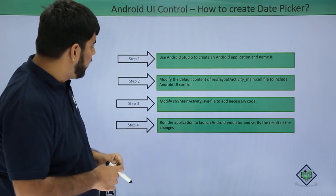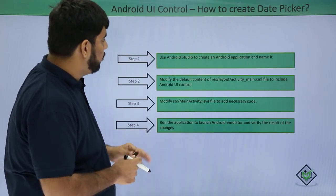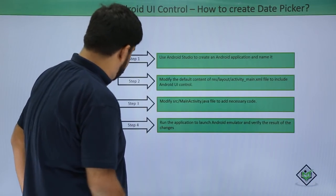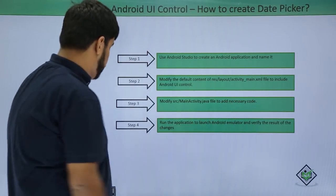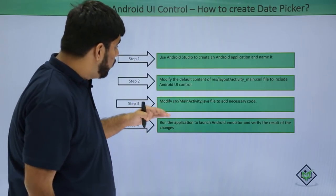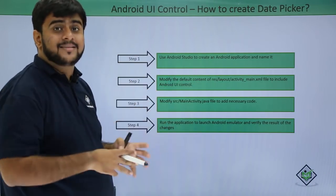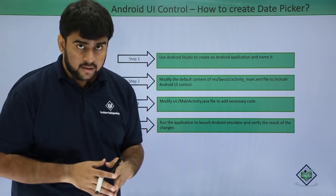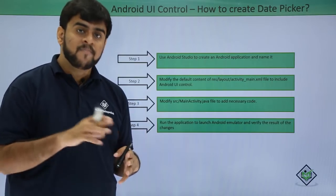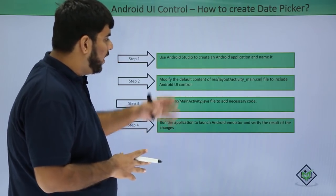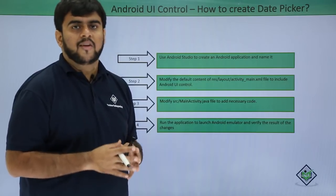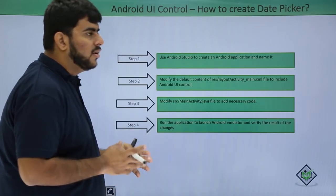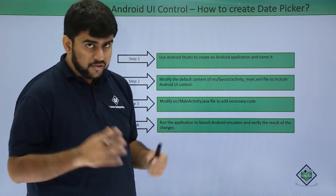Let's get started with the date picker. These are the steps to create one: open Android Studio, create a new application, set up the layout with a button to initiate the date picker, and add a text view to show the selected date in activity_main.xml. After that, go to MainActivity.java and add the code to set up the entire date picker dialog. When you run the application you should see the date picker dialog on your screen.